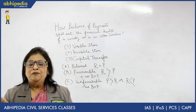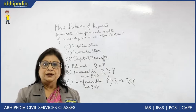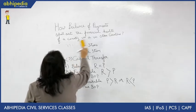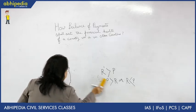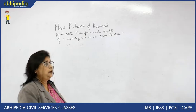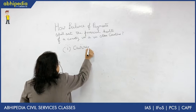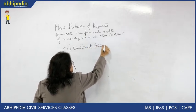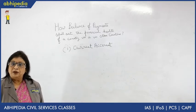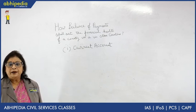Now we move on to different parts of balance of payment — we have the current account as well as the capital account. Under current account, we include export and import of visible items plus export and import of invisible items. This is what is known as current account.